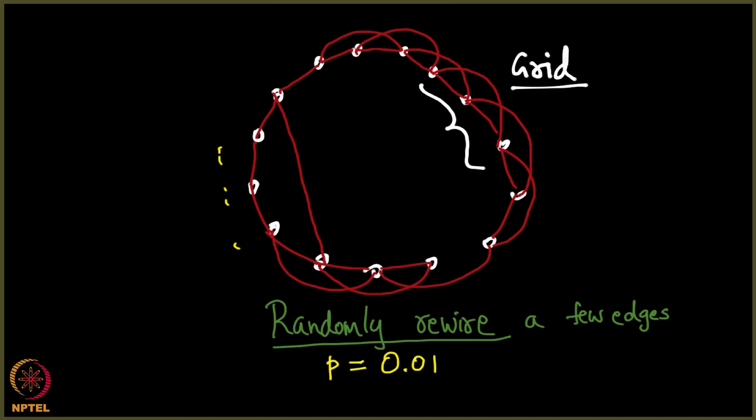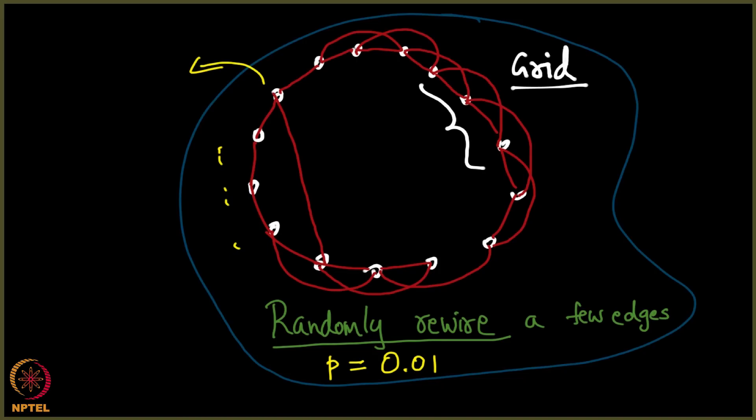It was observed that whenever we did something like this, the resultant network was indeed a small world network.